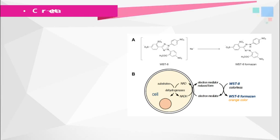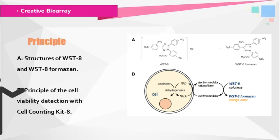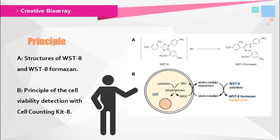CCK-8, also named WST-8, is a second-generation water-soluble tetrazoleum salt that is better soluble than MTS. WST-8 is reduced by dehydrogenases in cells to give an orange-colored product, formazan, which is soluble in tissue culture medium. The amount of formazan generated by dehydrogenases in cells is directly proportional to the number of living cells.